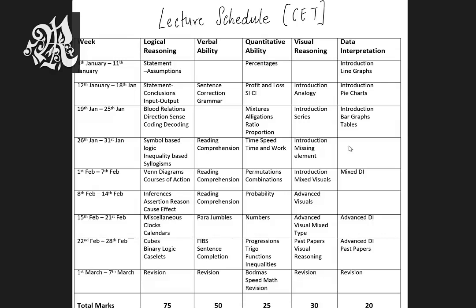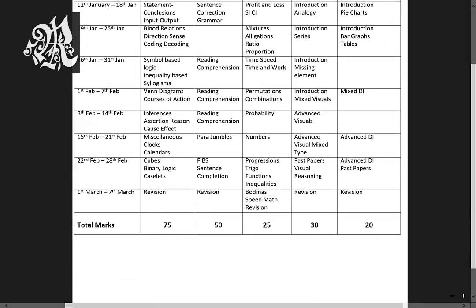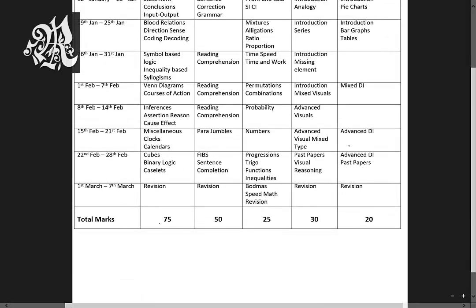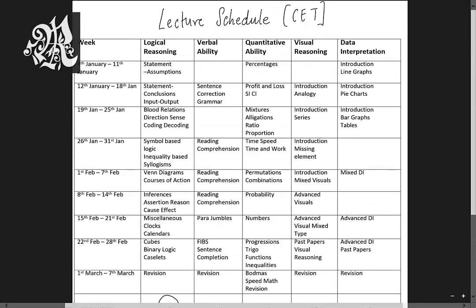Hi guys, I'm Rohan Raval. Let's have a look at CET in a little more detail. Let's start with logical reasoning. This is the most important area — as you can see, it comes for around 75 marks total.